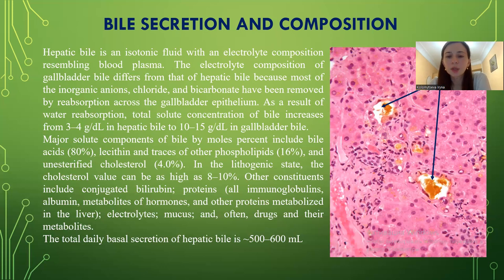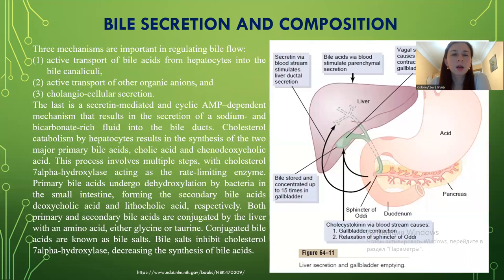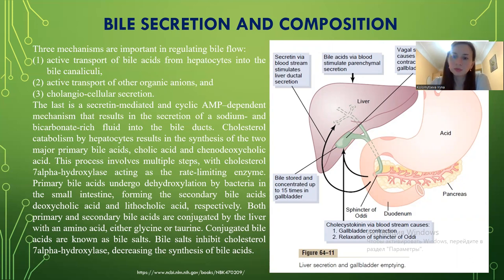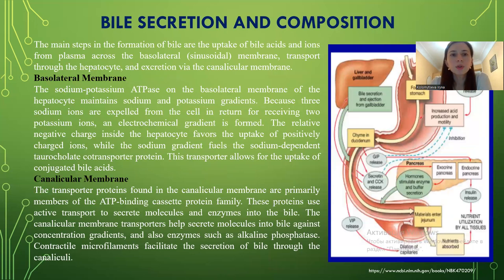The total daily basal secretion of hepatic bile is 500–600 mL. Three mechanisms are important in regulating bile flow: first, active transport of bile acids from hepatocytes into the bile canaliculi; second, active transport of other organic anions; and third, cholangiocellular secretion. The main steps in the formation of bile are the uptake of bile acids and ions from plasma across the basolateral membrane, transport through the hepatocytes, and excretion via the canalicular membrane.